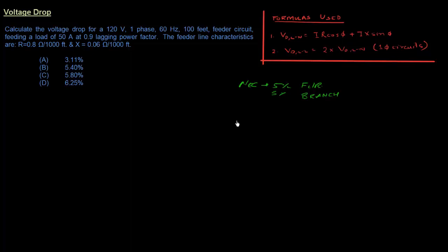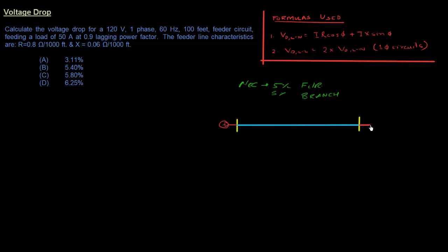Let's look at a generic single-line diagram. We have two buses connected by a line — on one end we have our source and on the other end we have our load.